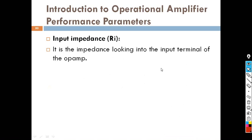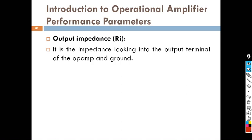Input impedance is the input resistance between the two terminals. For an ideal operational amplifier it is infinite. For a practical operational amplifier, some input impedance is present. Similarly, for an ideal operational amplifier the output impedance is zero, but for a practical operational amplifier the output impedance is some value in ohms.